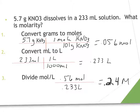Here we have an example: 5.7 grams of potassium nitrate dissolved in a 233 milliliter solution. What is the molarity? Remember, molarity is moles divided by liters. We must first take our 5.7 grams of potassium nitrate and convert it to moles. One mole of potassium nitrate weighs 101 grams from the periodic table, giving us 0.056 moles of potassium nitrate.